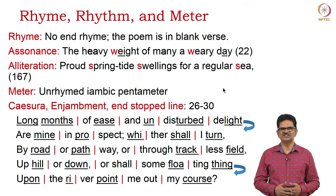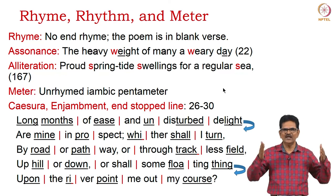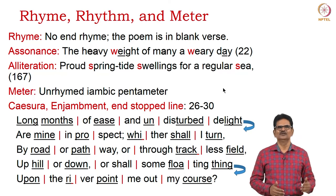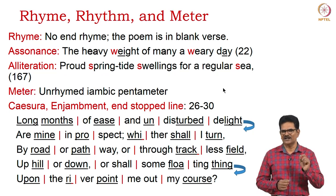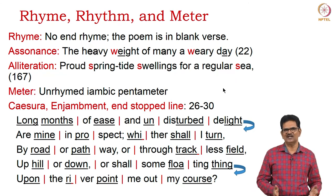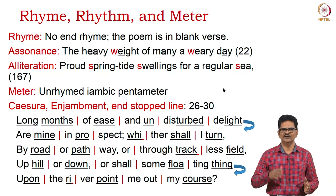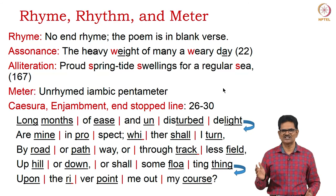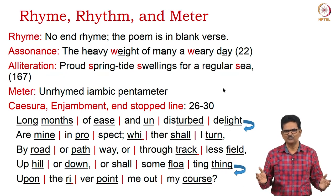When we look at rhyme, rhythm, and meter, we notice there is no end rhyme because it is written in blank verse. We can see some assonance and alliteration. Assonance appears in 'heavy weight of many a weary day' — heavy, weight, weary. For alliteration, we have 'proud spring-tide swellings for a regular sea.' In line 167, 'yes, yes, yes' is also a case of alliteration. The meter is unrhymed iambic pentameter. There are many examples of caesura and enjambment: 'Long months of ease and undisturbed delight are mine in prospect — whither shall I turn, by road or pathway or through trackless field, up hill or down, or shall some floating thing upon the river point me out my course.'